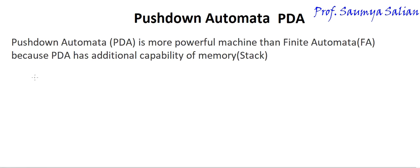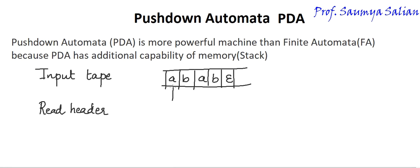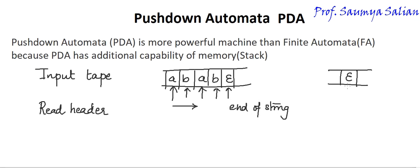Now let's understand what are the different components of PDA. It consists of an input tape, where the input tape size is considered to be infinite. The input tape is divided into cells and each cell is capable of holding a symbol. Reading an epsilon indicates that it is the end of the string, or if reading an epsilon initially, it indicates it is an empty string.